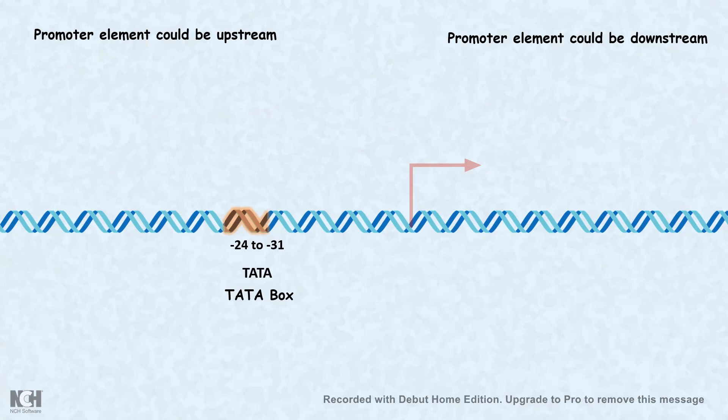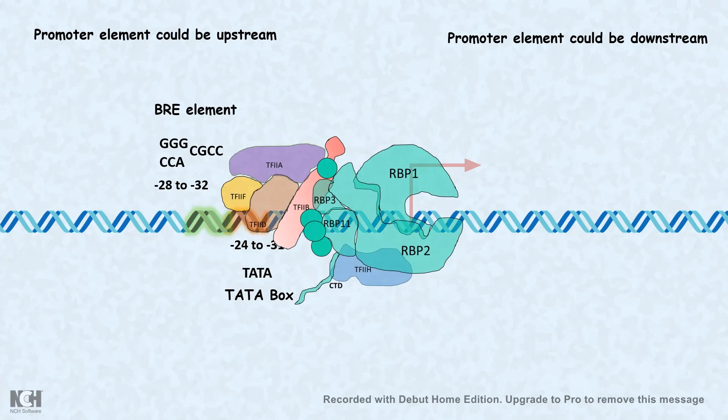This promoter element is known as the TATA box. Just a few bases upstream to the TATA box there is another element known as the BRE element. At the TATA box, TF2D — which contains the TATA box binding protein, a general transcription factor — binds and allows the whole transcription initiation machinery to be associated near the promoter and the transcription start site.